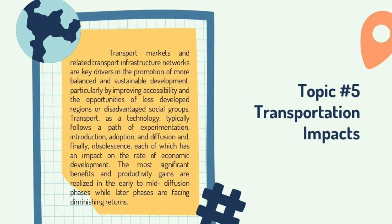Topic 5: Transportation Impacts. Transport markets and related transport infrastructure networks are key drivers in the promotion of more balanced and sustainable development, particularly by improving accessibility and opportunities of less developed regions or disadvantaged social groups. Transport, as a technology, typically follows a path of experimentation, introduction, adoption, and diffusion, and finally obsolescence, each of which has an impact on the rate of economic development. The most significant benefits and productivity gains are realized in the early to mid-diffusion phases, while later phases face diminishing returns.